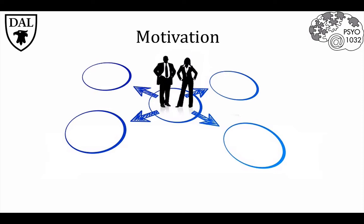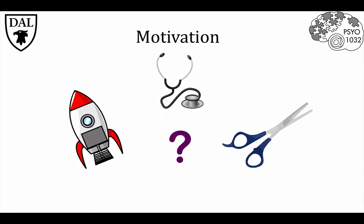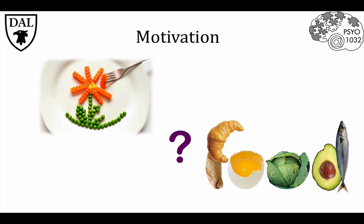Some of these decisions are deliberate and take years, like choosing what kind of career to pursue, while others are more spontaneous and unplanned, like the kinds and amounts of food we choose to eat.